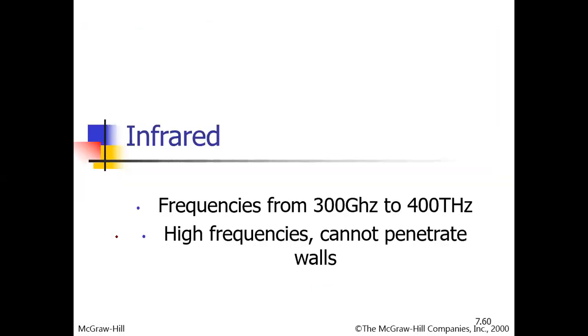The third type of waves we looked into was infrared and infrared kind of range from frequencies higher than microwaves. Normally frequencies from 300 gigahertz to 400 terahertz are the frequency waves for infrared. They are normally used for short-range communication. Infrared waves, since they have such a high frequency, obviously cannot penetrate walls.